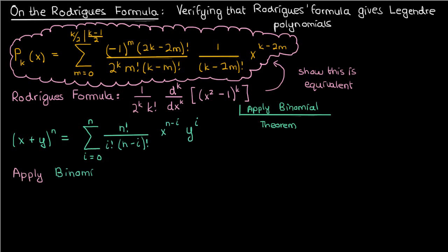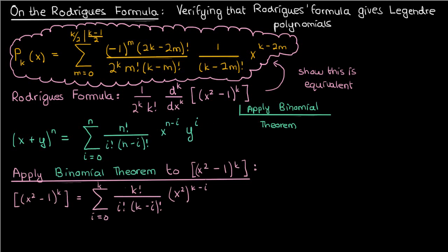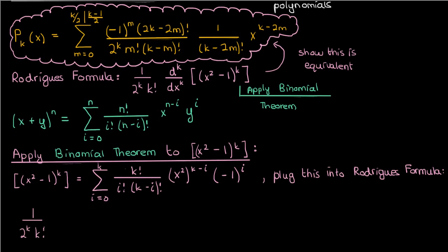So if I applied this binomial theorem to the x squared minus 1 to the power k in the Rodriguez formula, here's what I would end up with. Note that the n from the binomial theorem has been replaced by the k. If I plug this into the Rodriguez formula, then here is what I end up with.